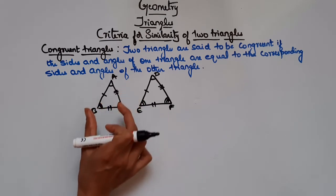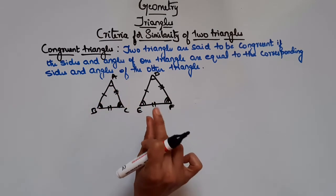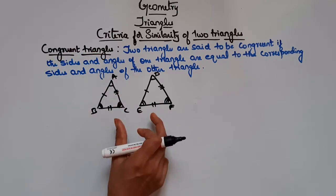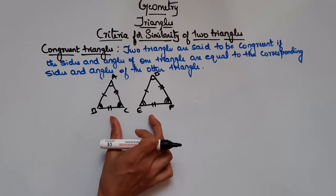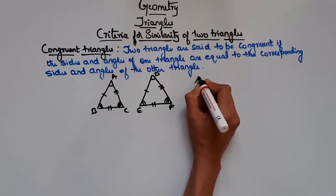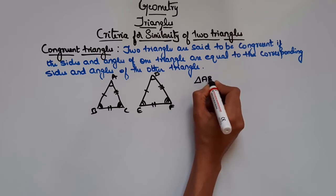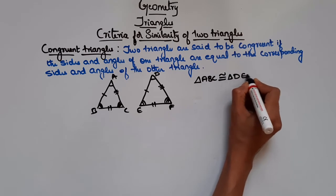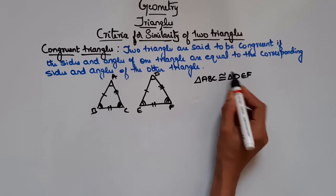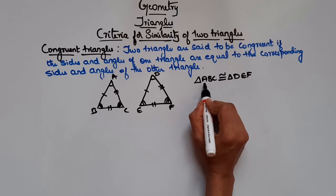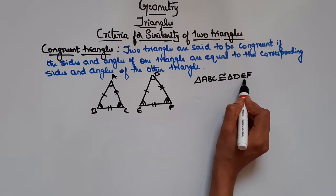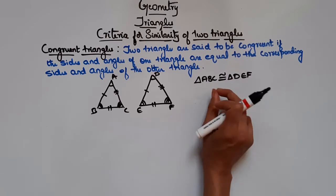In simple terms, triangles which have the same shape and size — in other words, if you place triangle ABC upon DEF it should match exactly — such triangles are called congruent triangles. We represent this as triangle ABC is congruent to triangle DEF, where angle A corresponds to angle D, angle B to angle E, and angle C to angle F.